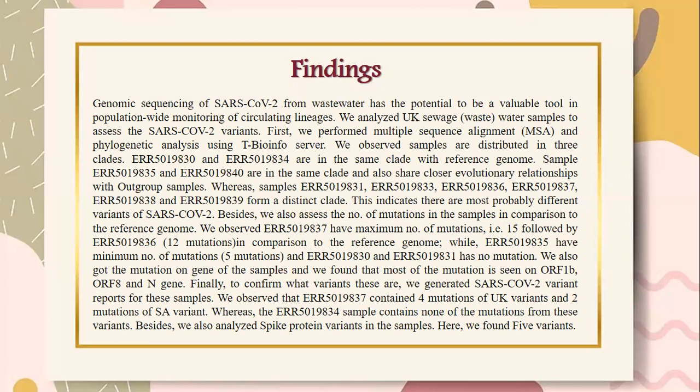Finally, to confirm what variants these were, we generated a SARS-CoV-2 variant report for these samples. We observed that ERR5019837 contained 4 mutations of the UK variant and 2 mutations of the SA variant, whereas the ERR5019834 sample contains none of the mutations from these variants. We also analyzed spike protein variants in the samples and found 5 variants.